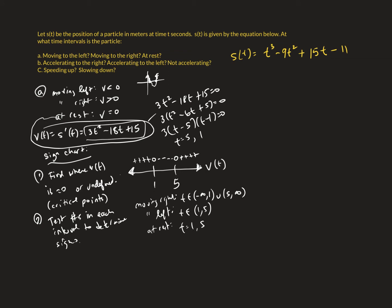That's a sign chart. You find where the function you're trying to determine the sign of is equal to zero or undefined, put those values on a number line, test the intervals, and label the signs.